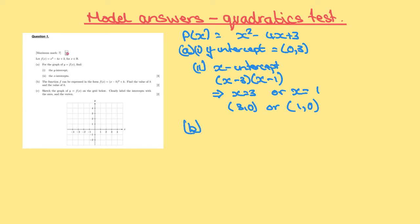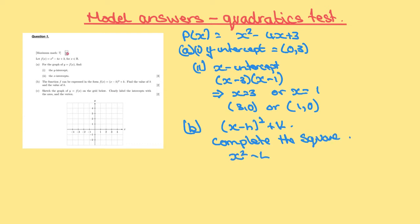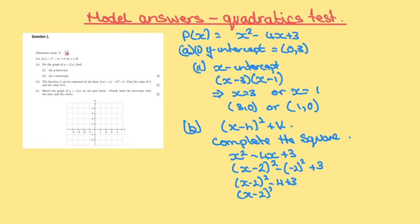Part B: we need to put f of x into the vertex form, so we want it to look like x minus h all squared plus k. We need to complete the square. Starting with x squared minus 4x plus 3, we halve the constant associated with x to get x minus 2 all squared, giving us x minus 2 all squared minus 4 plus 3.